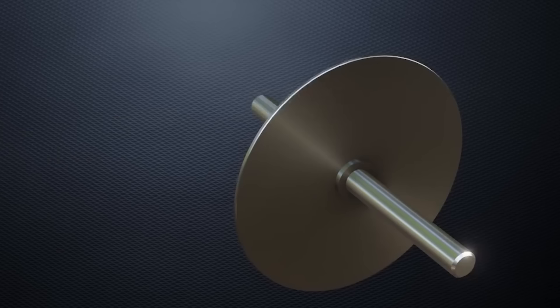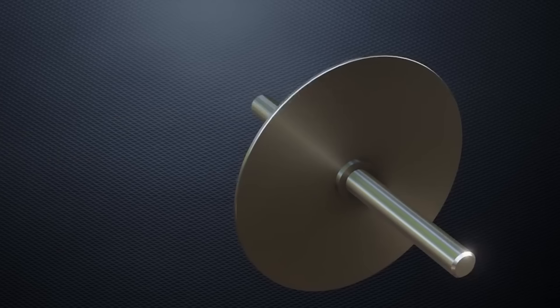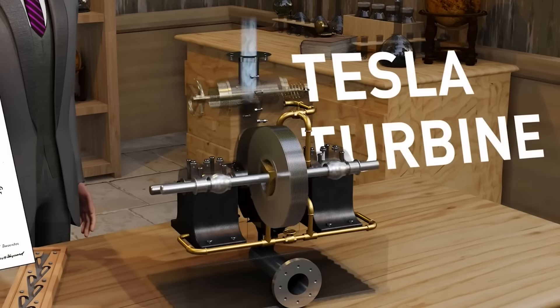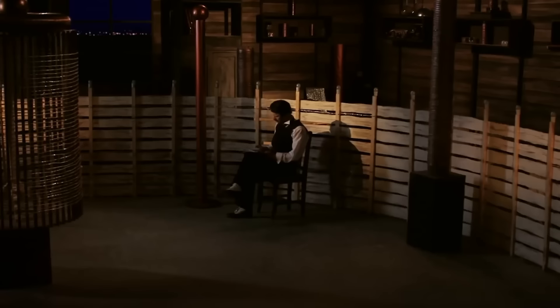Unlike traditional turbines that use blades, Tesla's innovation employed flat plates that allowed fluids to move in natural paths, resulting in a simple yet creative design that promised unparalleled longevity and efficiency by reducing wear and tear. Tesla envisioned that his turbine would not only transform the power industry.